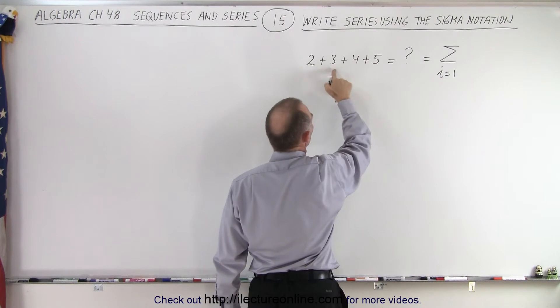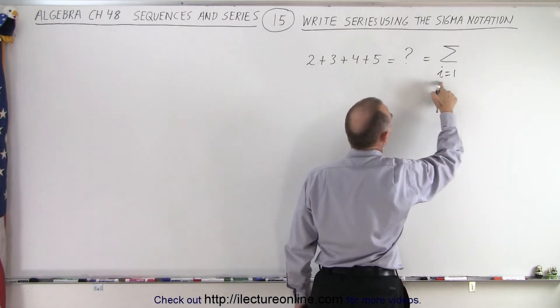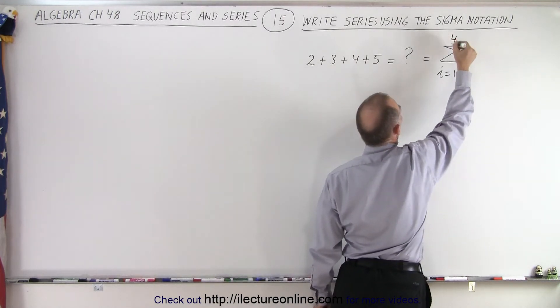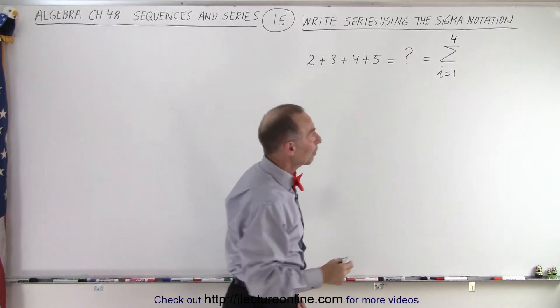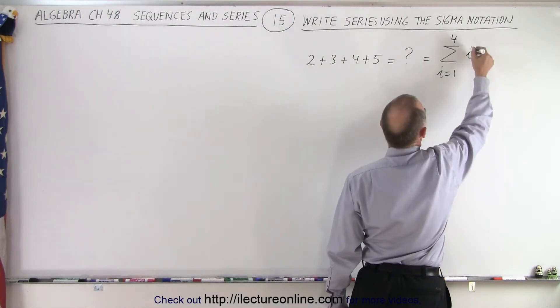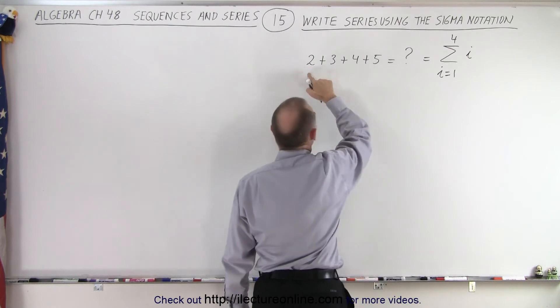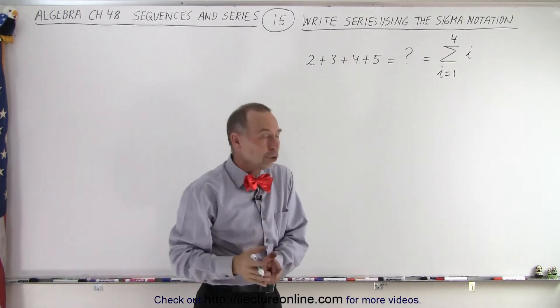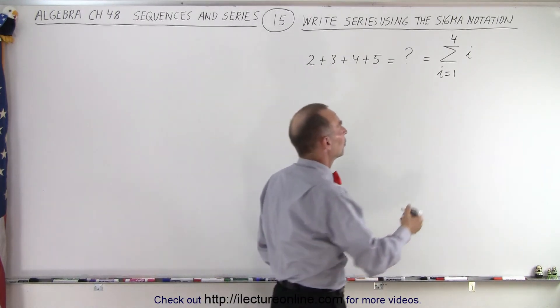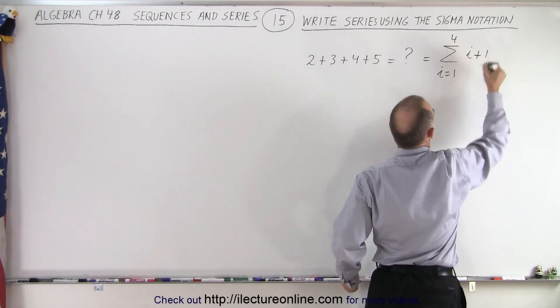There's four terms, one two three four, so we go from i equals one to four. But then if I plug in i here, notice that my first term would start equal with one and I start with a two, so that's one more than one, so I need to add one to the i.